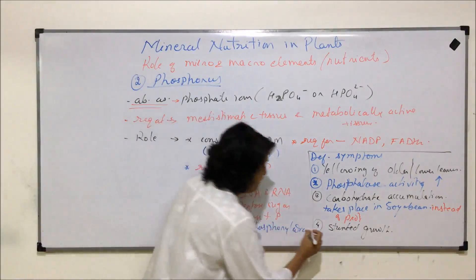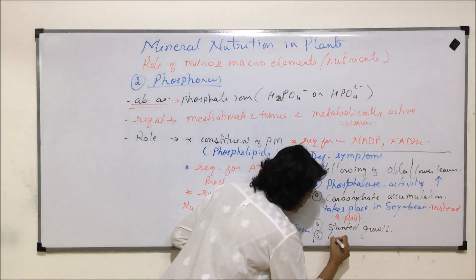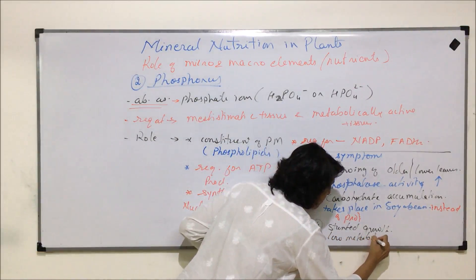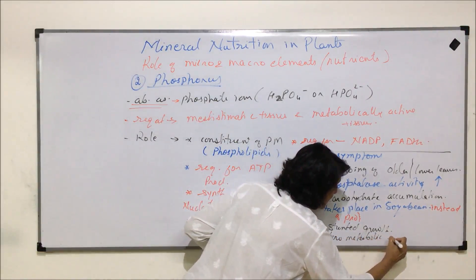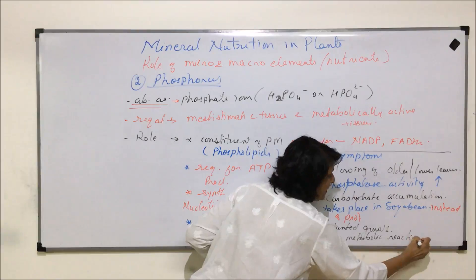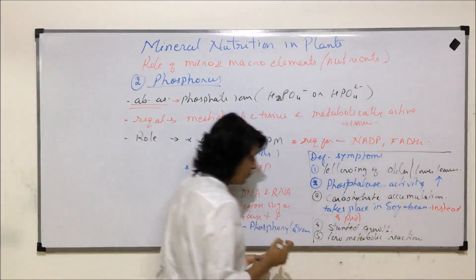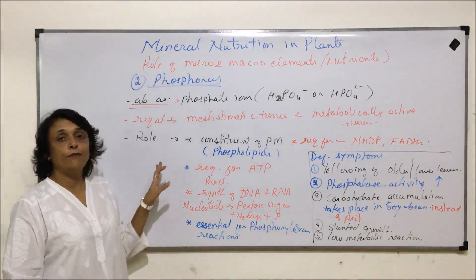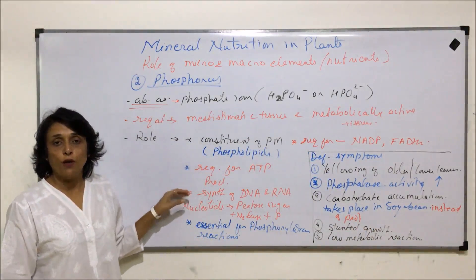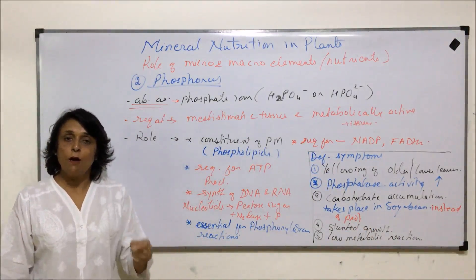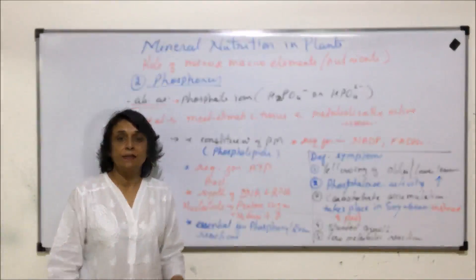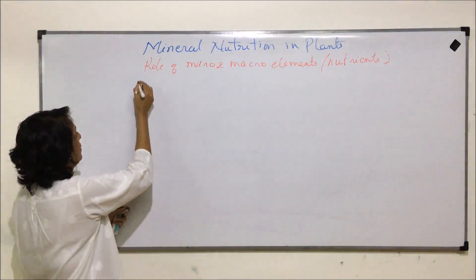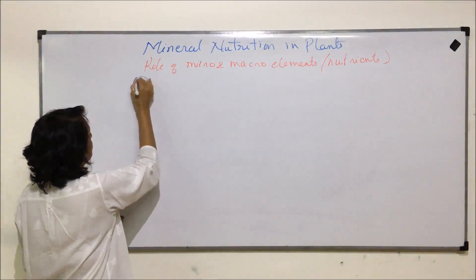Phosphorus deficiency also leads to low metabolic reactions, which results in stunted growth. There are certain deficiency symptoms common to both nitrogen and phosphorus since both are required for ATP production. After phosphorus, the next element we will discuss is potassium.